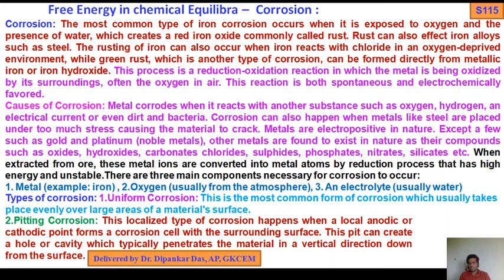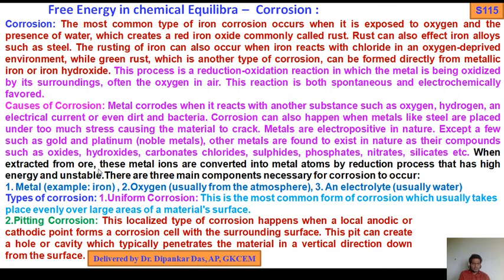So the causes of corrosion: metal corrodes with reaction to another substance — oxygen, hydrogen, or electrical current, or even dirt and bacteria. Corrosion can also happen when metals like steel are placed under too much stress causing material to crack. Metals are electropositive in nature except a few such as gold and platinum or noble metals. Other metals are found to exist in nature as compounds of oxides, hydroxides, carbonates, sulfates, chlorides, nitrates, silicates, etc. When extracted from ore, these metal ions are converted into metal atoms by a reduction process, and that gives them high energy, making them unstable.